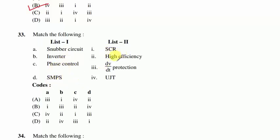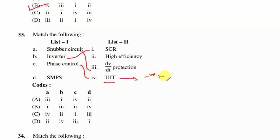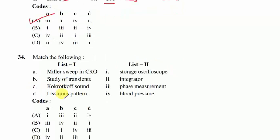Question 33: match snubber circuit, inverter, phase control, and SMPS with SCR, high efficiency, dv/dt protection, and UJT. Snubber circuit → dv/dt protection. Inverter → SCR (silicon controlled rectifier). Phase control → UJT (uni-junction transistor, which has negative resistance and acts as an oscillator). SMPS → high efficiency (used in CPUs to regulate power supply). Option A is correct.